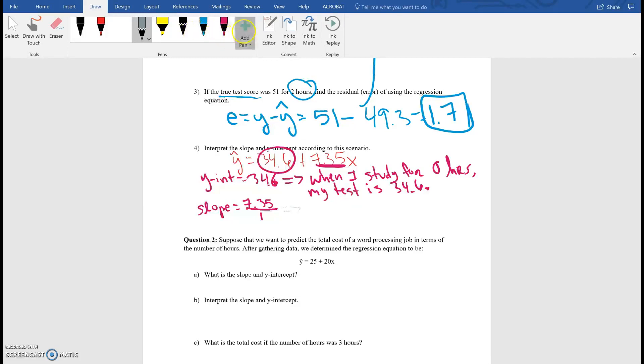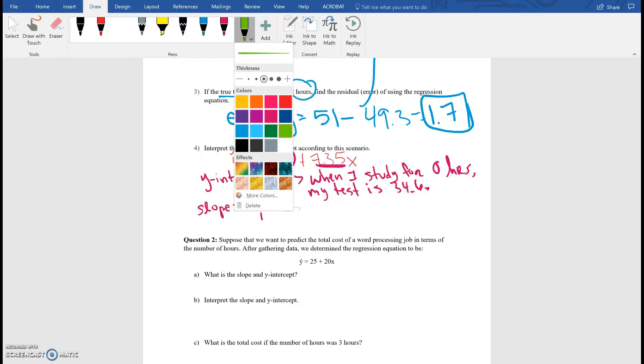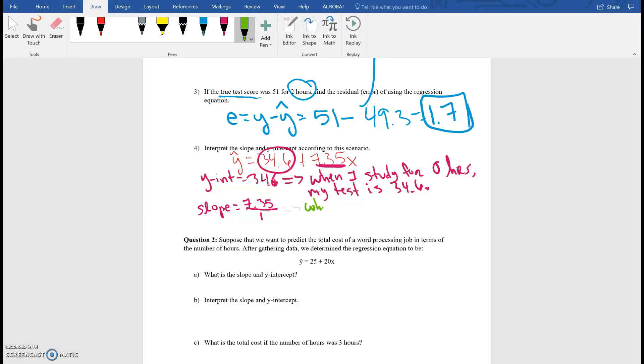So what does this mean? Let me choose a different color. I like the green, so I'm going to use the green. Okay, so what does this mean? So this means that when I increase my X, my hour studied by one hour, I increase my score by how many units? By 7.35 points, or percents. I think it's in percent.